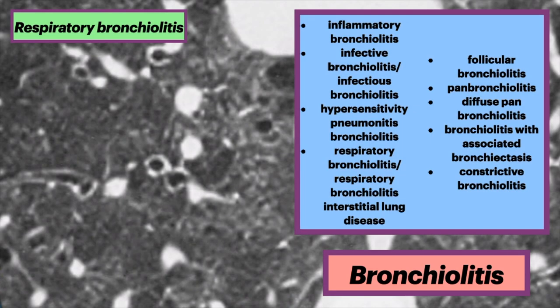The differential for bronchiolitis is vast and includes inflammatory, infective or infectious bronchiolitis, bronchiolitis associated with HP (hypersensitivity pneumonitis), RB (respiratory bronchiolitis), RB-ILD (respiratory bronchiolitis-interstitial lung disease), follicular bronchiolitis, panbronchiolitis, diffuse panbronchiolitis, bronchiolitis with associated bronchiectasis, and constrictive bronchiolitis.